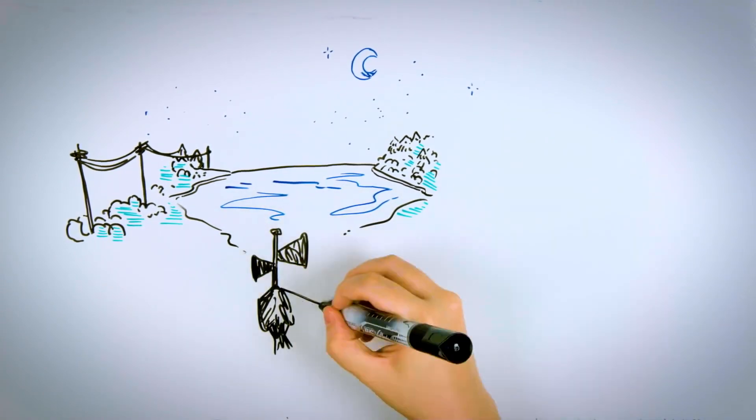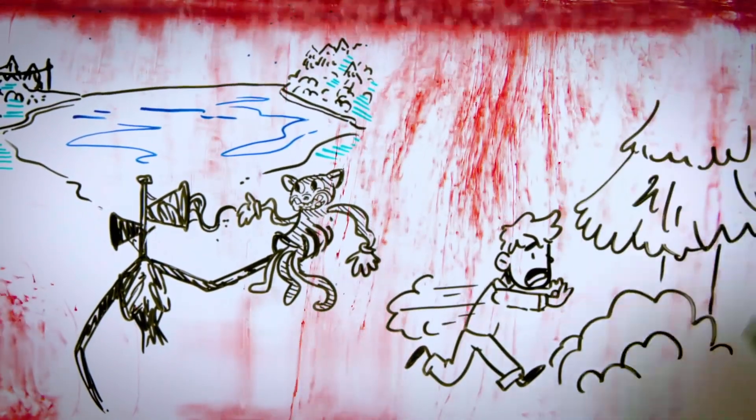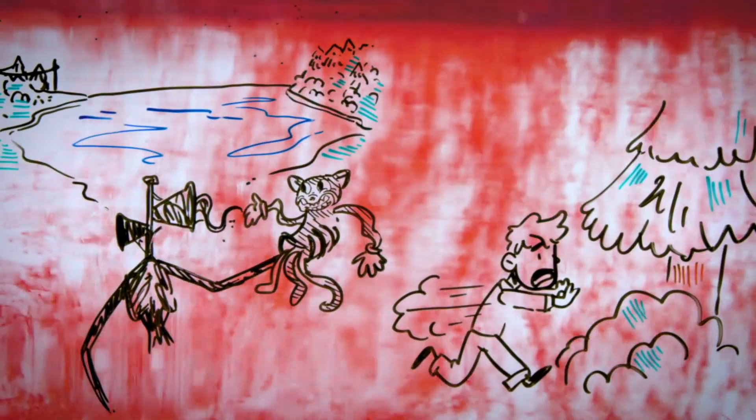Letting himself get carried away by the anger, Siren Head grabs Cartoon Cat with his big hands, a situation that Timmy takes advantage of to run to the woods.